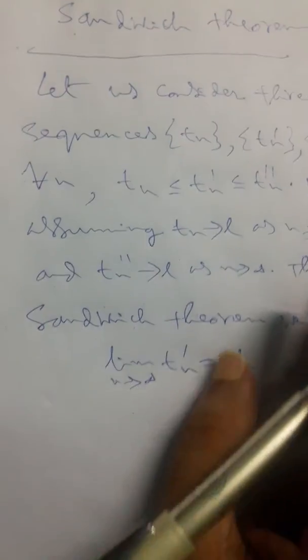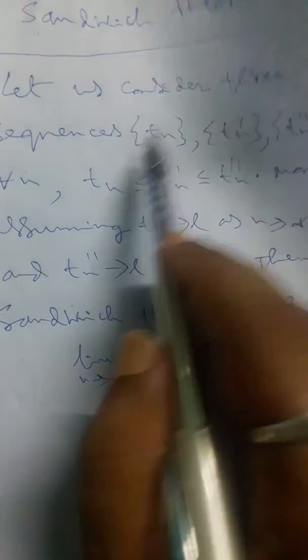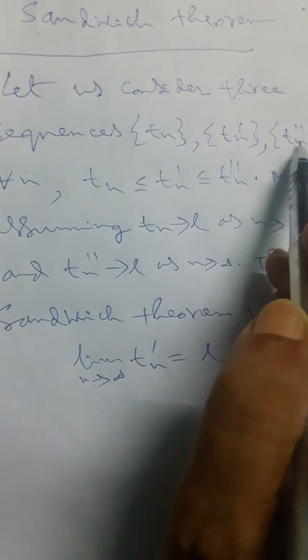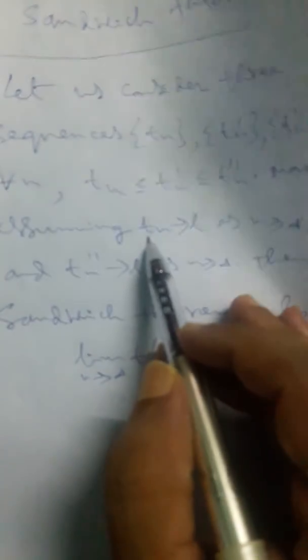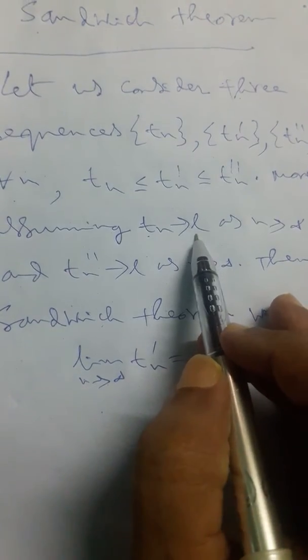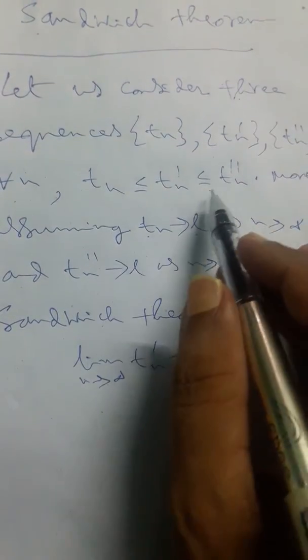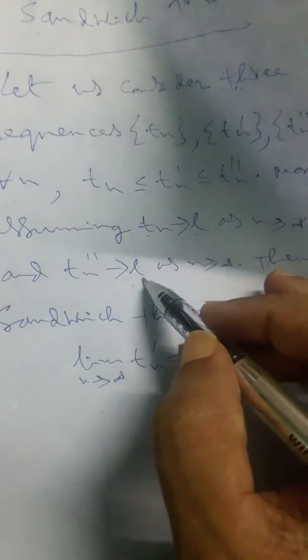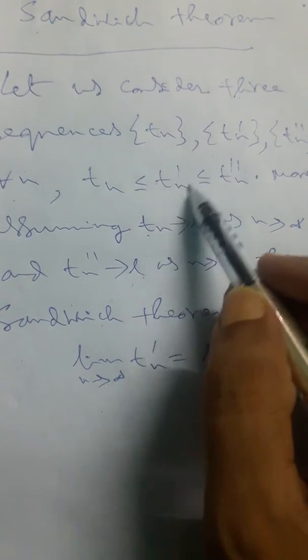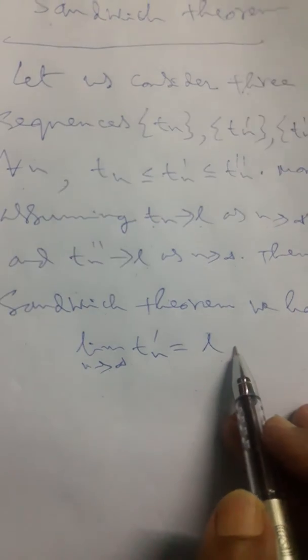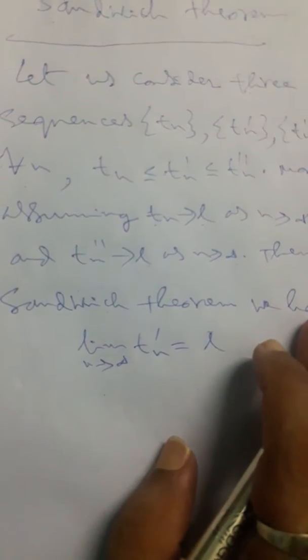From the theorem it is clear. Here we consider the three sequences tₙ, t′ₙ, and t″ₙ, and for all n we have tₙ ≤ t′ₙ ≤ t″ₙ. Our assumption is: if t″ₙ approaches limit l as n tends to infinity, then by the Sandwich Theorem we say the limit as n tends to infinity of t′ₙ is equal to l. So it is to be proved.